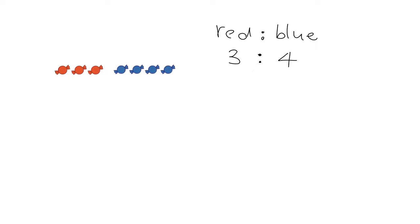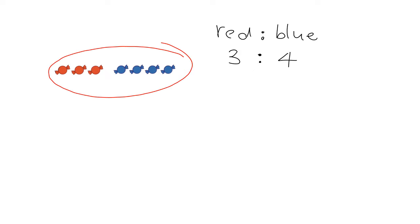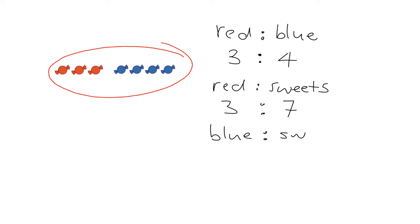The other scenario: if the ratio of red sweets to blue sweets is 3 to 4, let's get the other ratios we can write down immediately. Drawing the picture: for every three red sweets we have four blue sweets. In every group of sweets, three are red and four are blue, giving a group of seven sweets. So the ratio of red sweets to total sweets is 3 to 7, and the ratio of blue sweets to total sweets is 4 to 7.